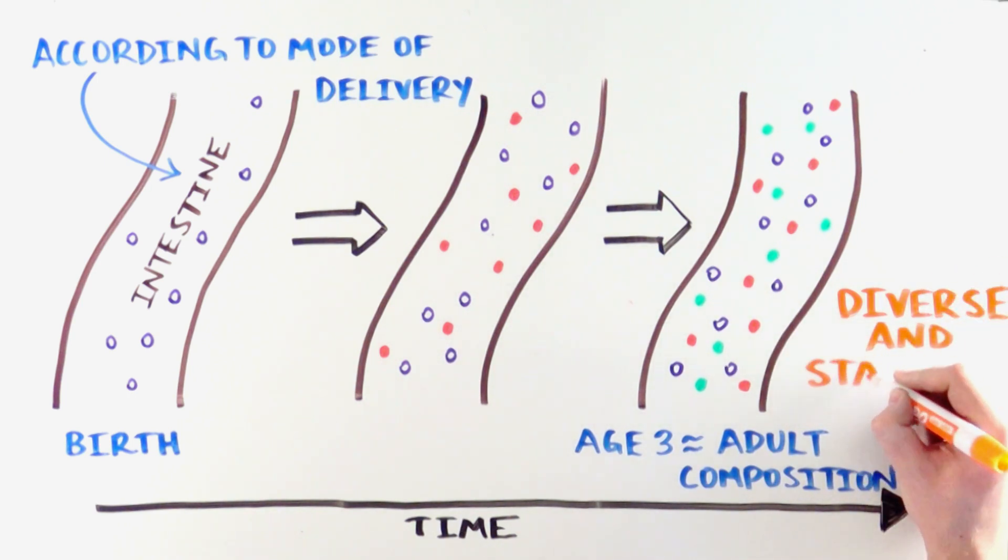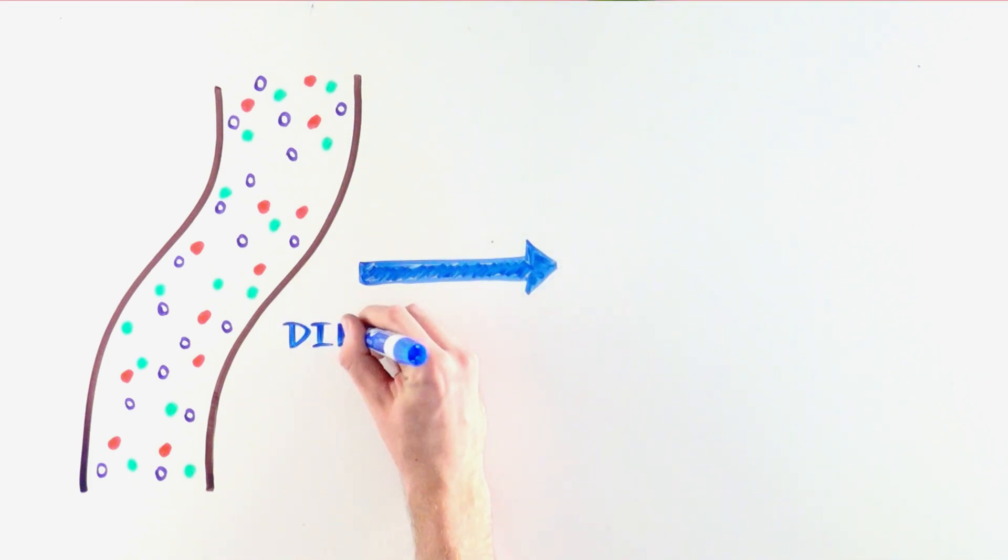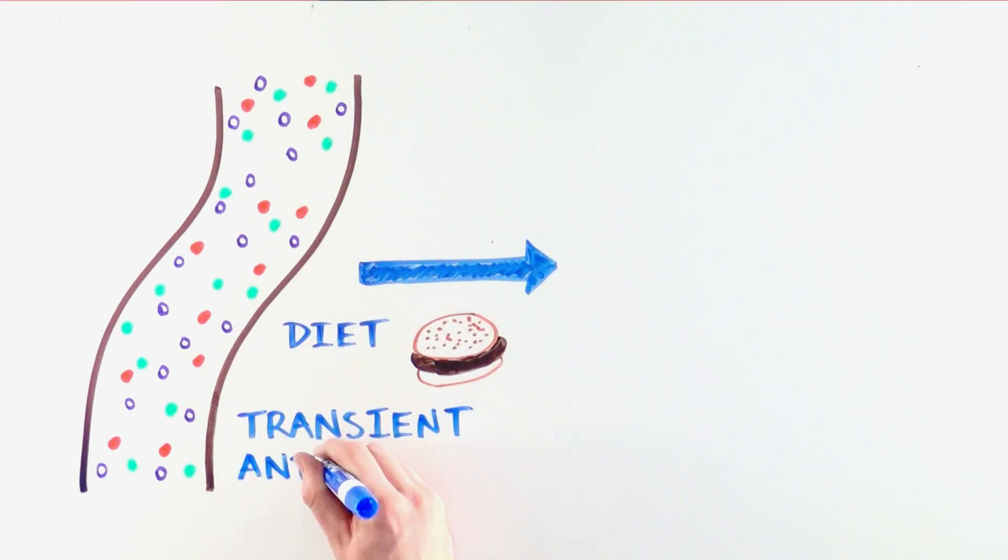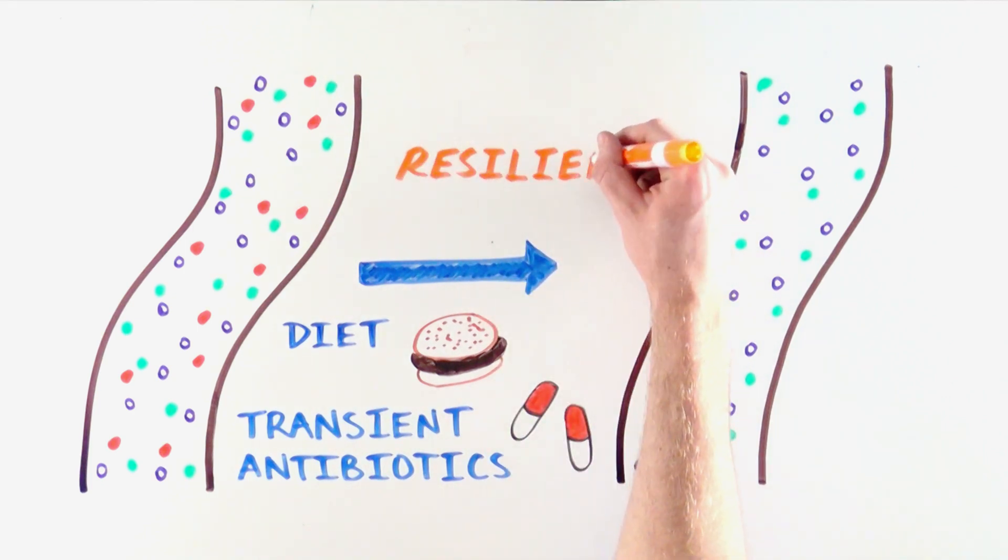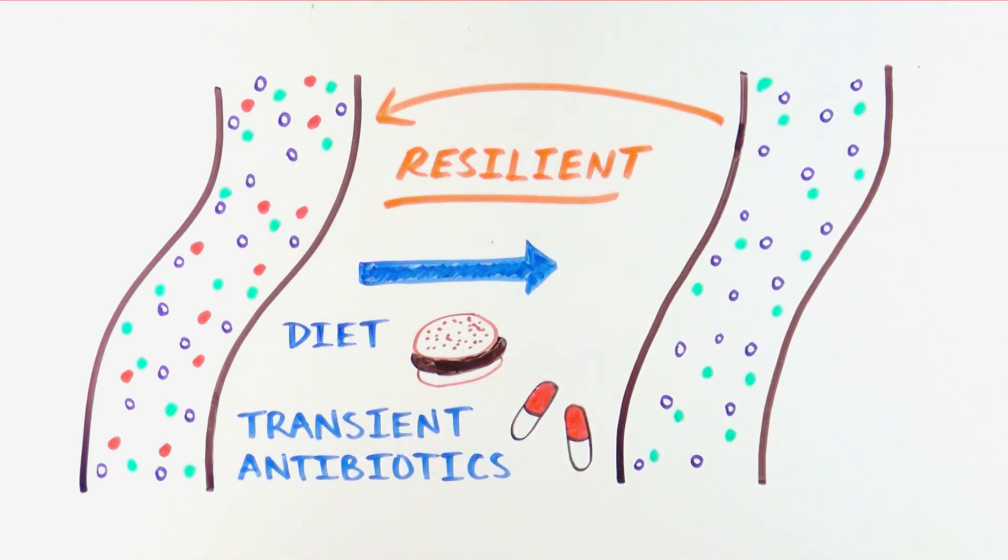Some factors can still affect its composition, for instance, diet changes and transient use of antibiotics. Fortunately, our gut microbiome is very resilient and can return to its original composition after a disturbance.